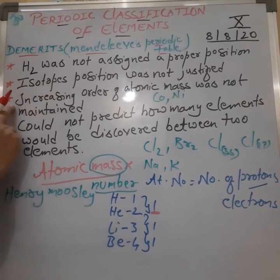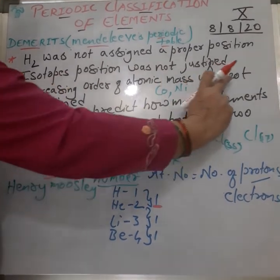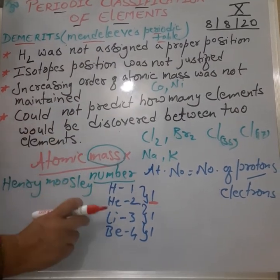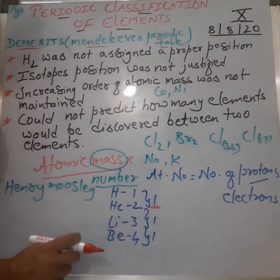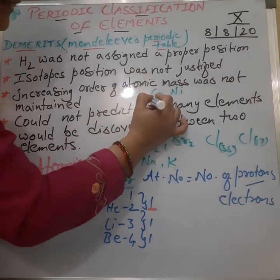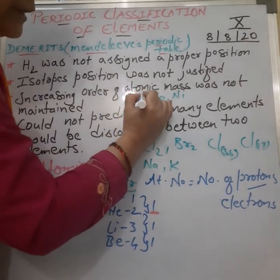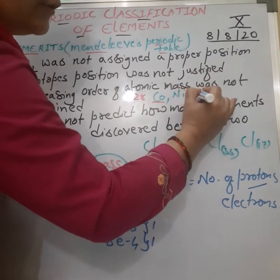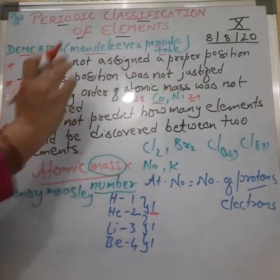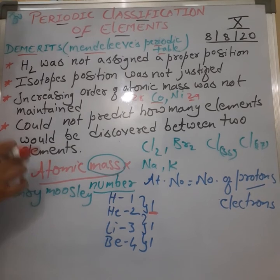Coming to the second drawback — the increasing order of atomic mass was not maintained. If we take atomic number as the criteria, the atomic number of cobalt is 27 and nickel is 28, so their position was also justified.